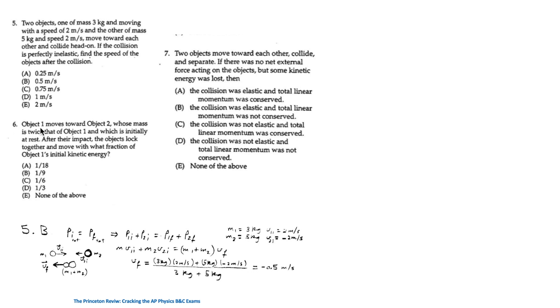For question 6, object 1 moves towards 2 whose mass is twice that of 1 and 2 is initially at rest. After their impact, the objects lock together and move with what fraction of 1's initial kinetic energy. The mass of 1 is M and that of 2 is 2M, and the initial speed of 2 is 0. We apply the law of conservation of momentum immediately before and immediately after the collision, and we get V final for the combined object. V final is one third of V1 initial.